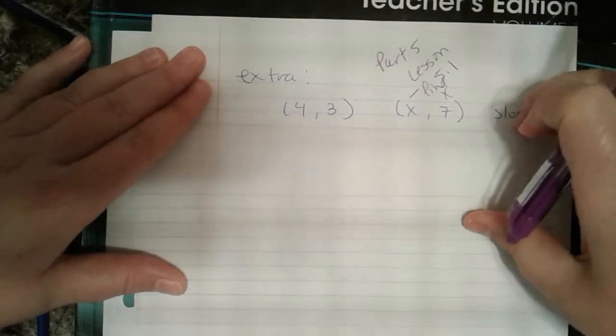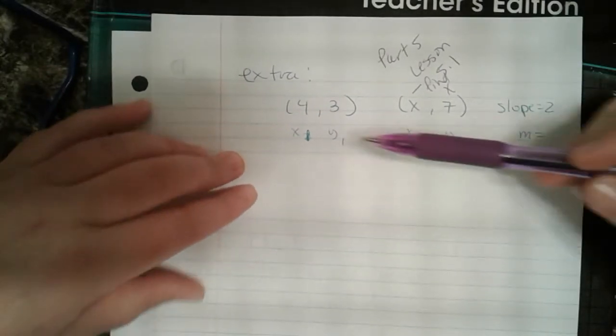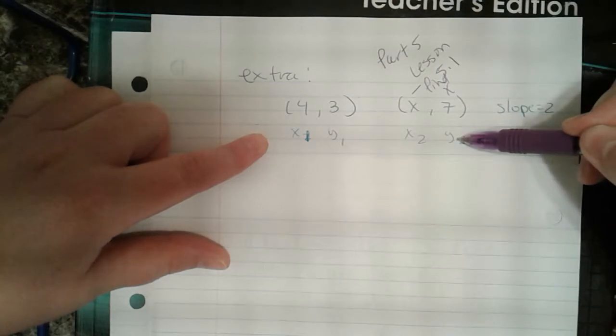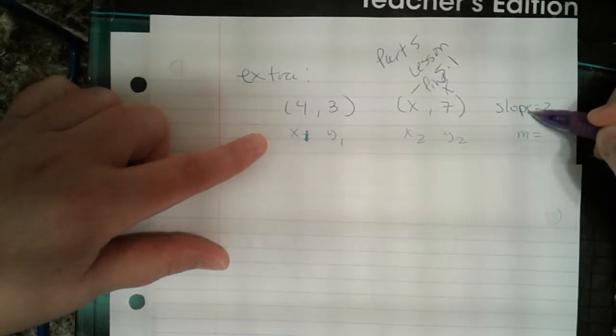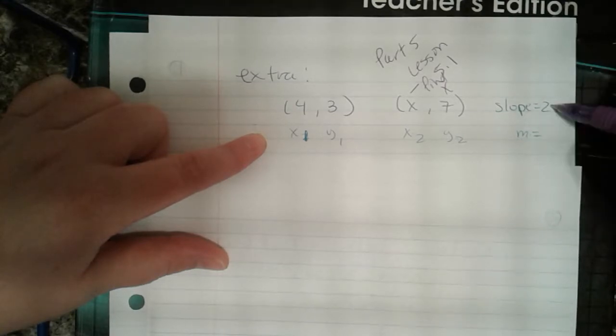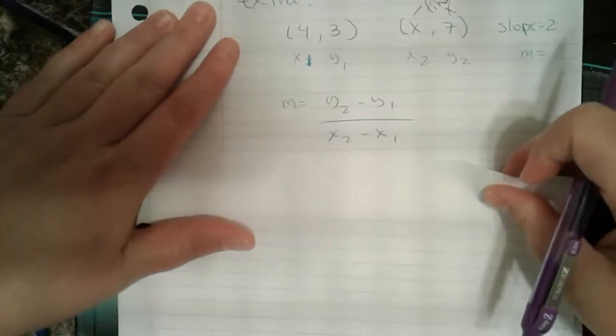Well, if you remember from previous videos, the very first thing we have to do is label. So I'm going to label this as x1, y1, x2, y2. And remember, slope is really the M, right? M equals slope. So this is M equals 2. Well, it's important to remember the formula.